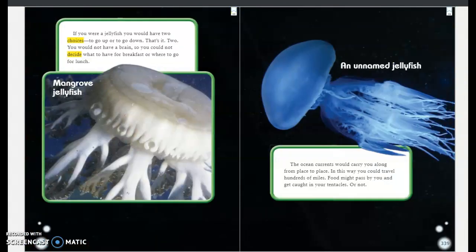If you were a jellyfish, you would have two choices: to go up or to go down. That's it. Two. You would not have a brain, so you could not decide what to have for breakfast or where to go for lunch. This is a mangrove jellyfish.